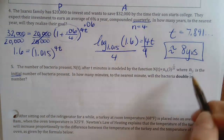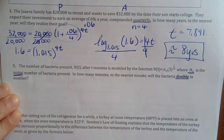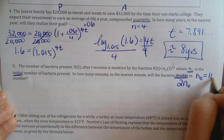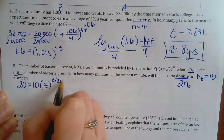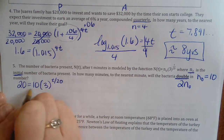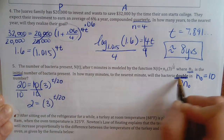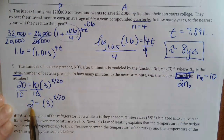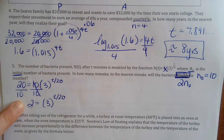Whatever you start with, you want double the initial amount. You can keep it in terms of N-sub-zero, or just pick a random number like 10 and set it equal to 20. Either way, you end up dividing that amount to the other side and it gets set equal to 2. If it said double, set equal to 2. Triple — set equal to 3. Half — set equal to 0.5. You don't need to know how much you started with; you just need the relationship.